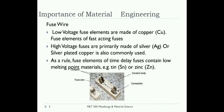That shows the behavior of the material — due to the presence of an external material element, that particular material acted as a shield for the iron. That's the importance of material science. Now, what is the use of fuse wire? Low-voltage fuse elements are made of copper. High-voltage fuse elements of fast-acting fuses are primarily made of silver; silver-plated copper is also commonly used. Fuse elements of time-delay fuses contain lower-melting-point materials. The main point in using fuse material is that it should fail suddenly when there is a voltage fluctuation, otherwise the equipment will be damaged.